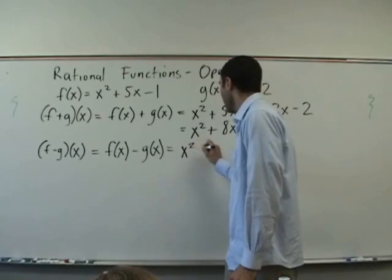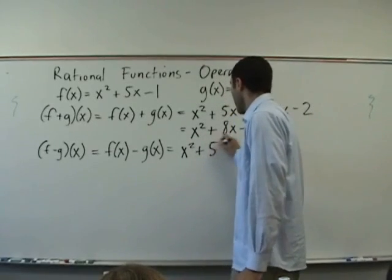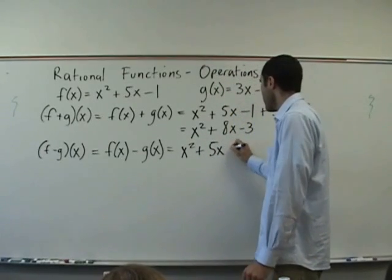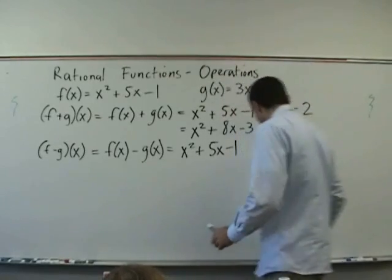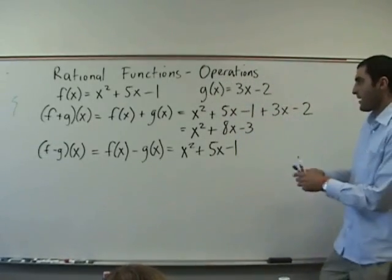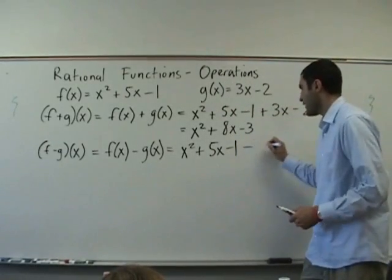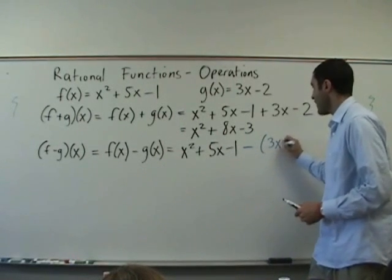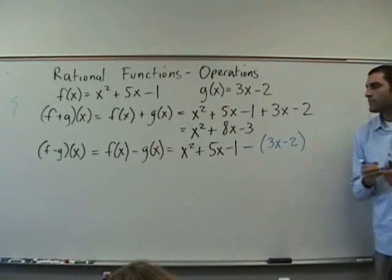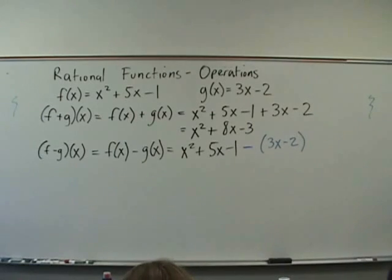So, x squared. Does anyone have a problem with parentheses? Yes. All right. Then get over it right now. Because, don't forget, minus 3x minus 2. Why do we only put a negative into the second half?